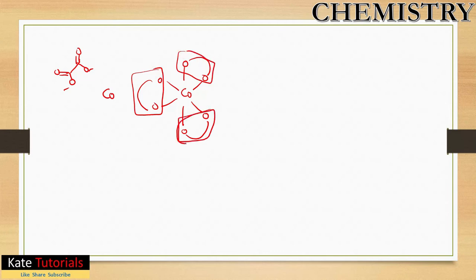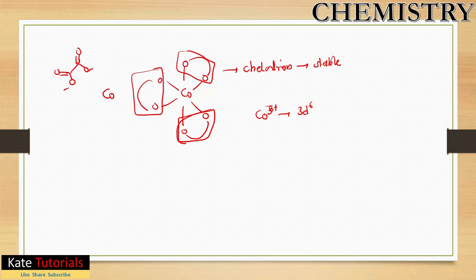Because of this chelation, the complex becomes very stable. Due to the chelate effect, the energy gap (crystal field splitting) becomes larger. This larger splitting means the complex now acts as a strong field system, and with Co³⁺ having 3d⁶, the six electrons will pair up in the lower energy orbitals.